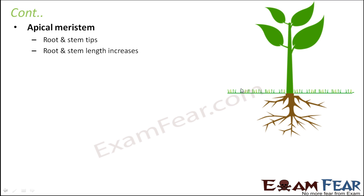Let us understand apical meristem. As the name suggests, the term apical is derived from 'apex', which means tip. So apical meristem is the meristem present at the tip — it is present in root and stem tips. As a result of this meristem, the root and stem length increases, because meristematic tissues are regions of actively dividing cells, so more and more new cells are formed, increasing the length.